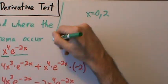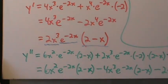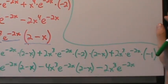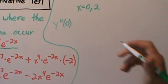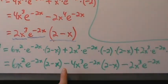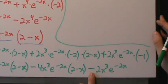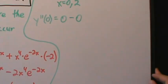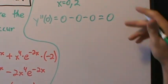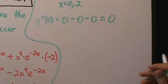Evaluating y double prime at x equals 0: every term contains x squared or x cubed, so when x is 0, every term equals zero. The first term is 0, the second term is 0, and the third term is also 0. So y double prime at 0 equals 0. And if you're thinking ahead — yes, that's bad. When the second derivative equals zero, the second derivative test is inconclusive, and we have to try something else.